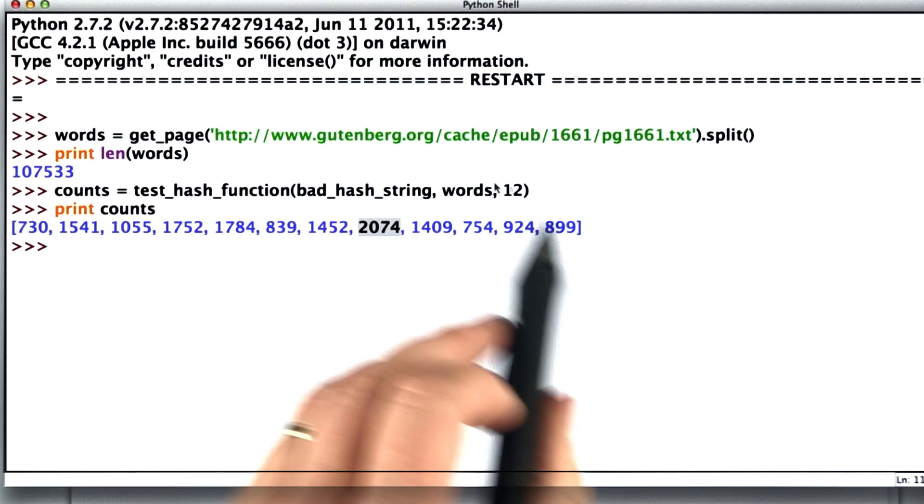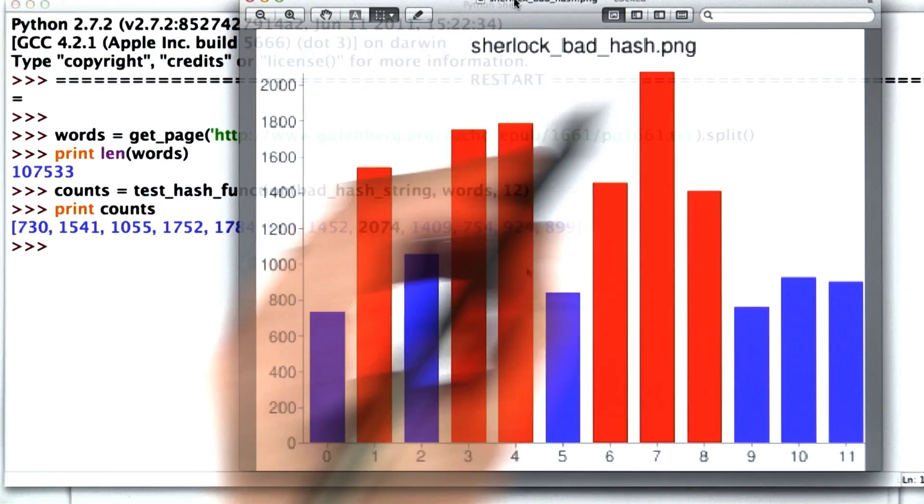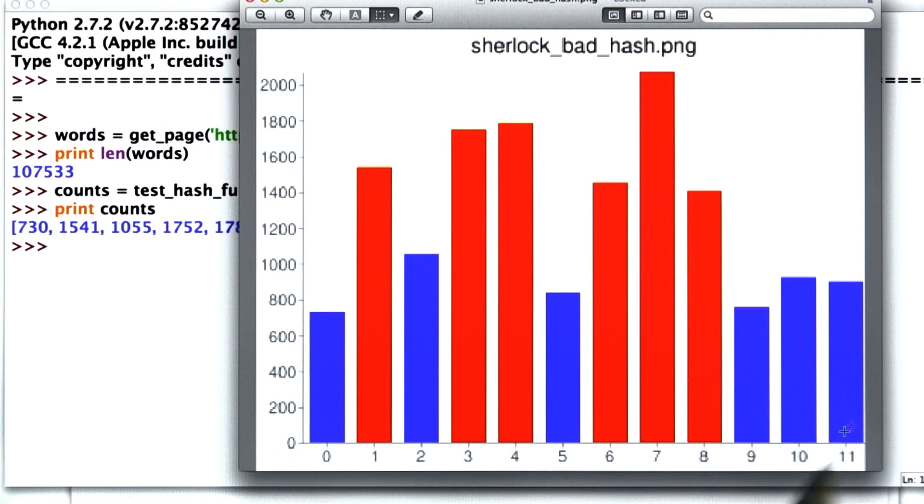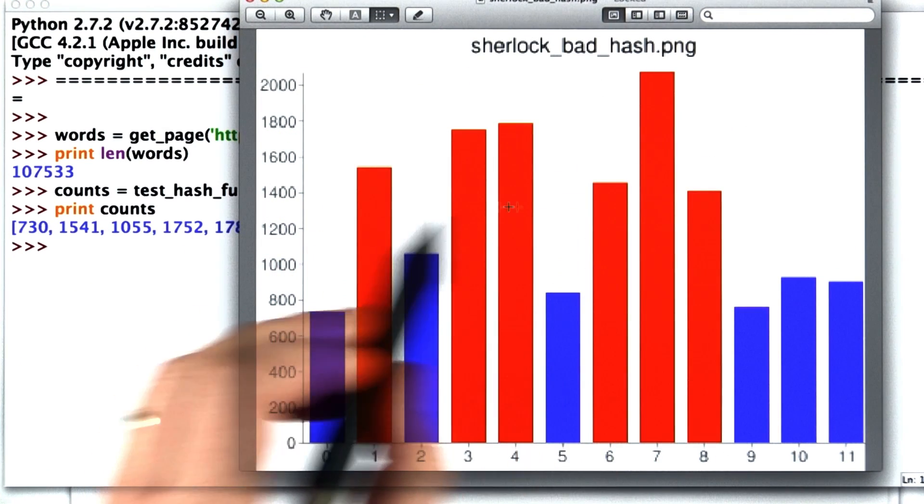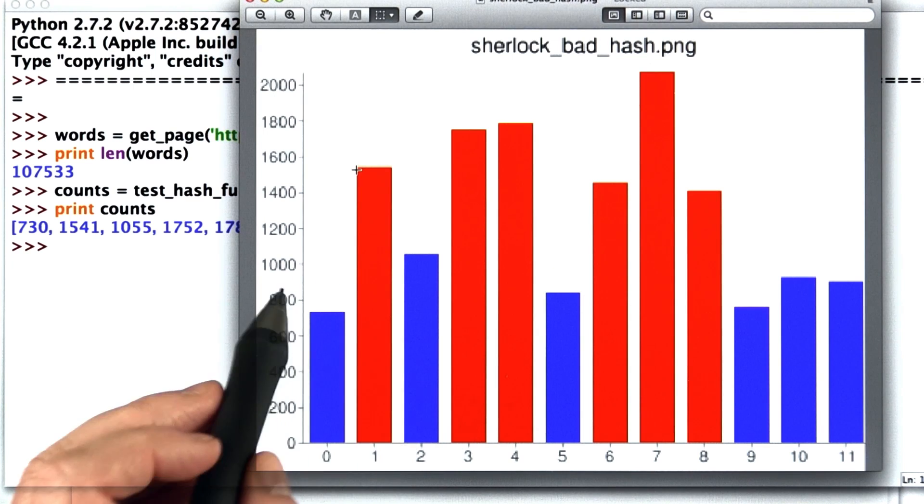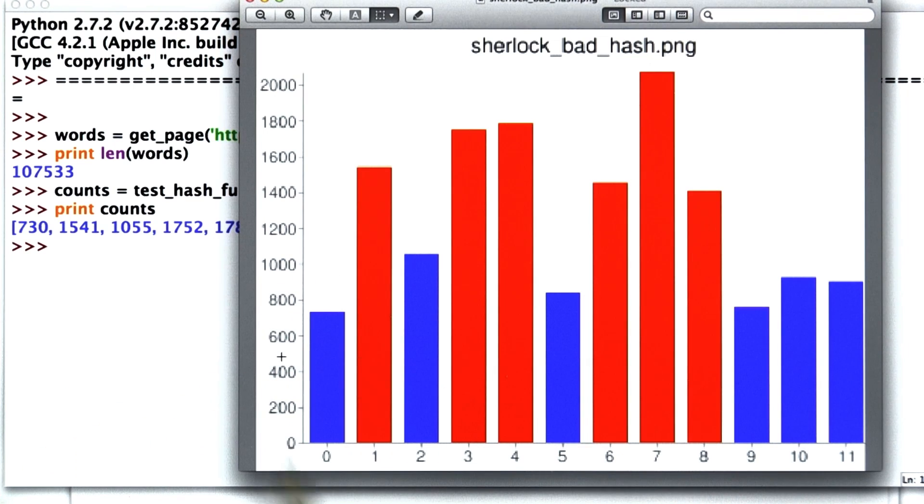If our hash function was good, we would want these to be about the same size. Here's what that looks like graphically. We have our 12 buckets. The ones that are red are too full. The ones that are blue are not full enough. We would like this to be a fairly flat graph, distributing all the words evenly between the buckets.